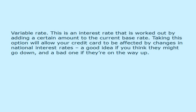Variable Rate. This is an interest rate that is worked out by adding a certain amount to the current base rate. Taking this option will allow your credit card to be affected by changes in national interest rates — a good idea if you think they might go down, and a bad one if they are on the way up.